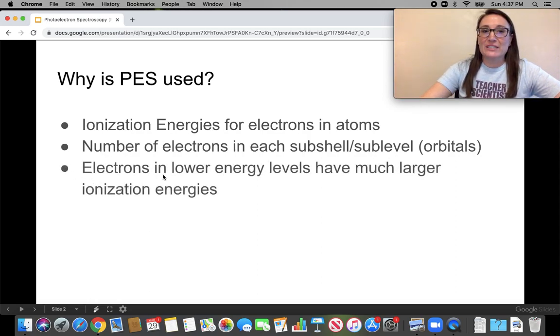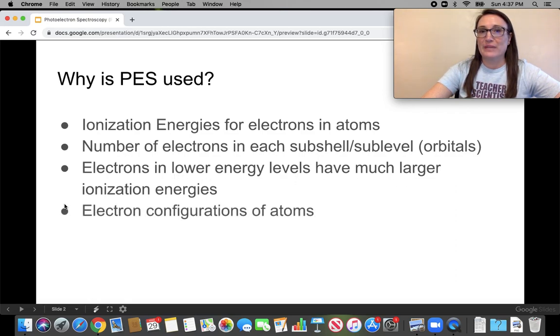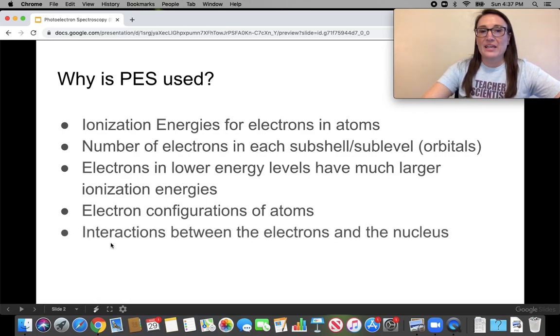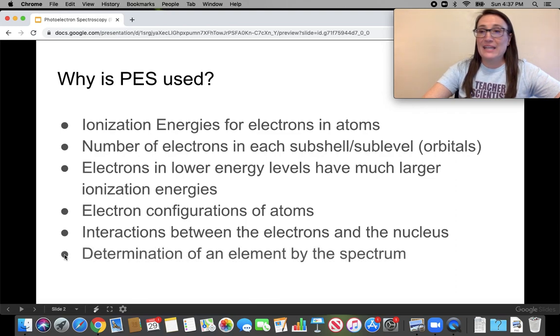It gives us the fact that lower energy levels have much larger ionization energies, also called binding energies. It can prove electron configurations of atoms. It also proves that there are different interactions between the electrons and the nucleus, especially like a 2p versus a 2s. We have proof that a 2p is less tightly bound than a 2s electron. Next, we can determine the unknown identity of an element just based off that spectrum.